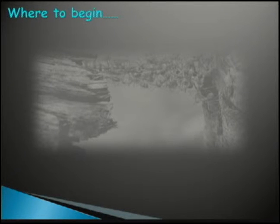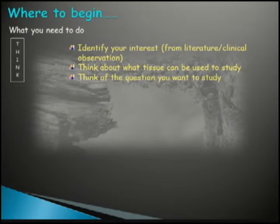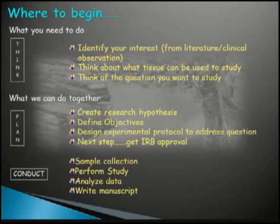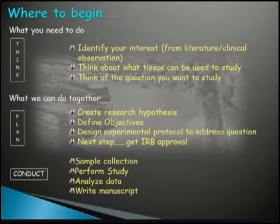Where can we really begin? You need to identify your interests — from literature or clinical observation. Think about what tissue you would like to use to study, then think about the question you want to study. We can help you create a research hypothesis based on your observation, interest, and what you want to study. Then define objectives — we can design experimental protocols to address your question appropriately.